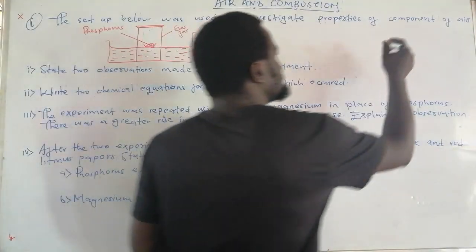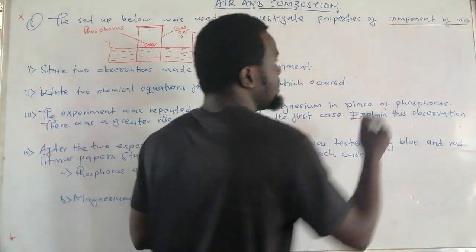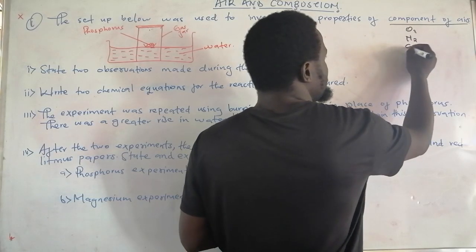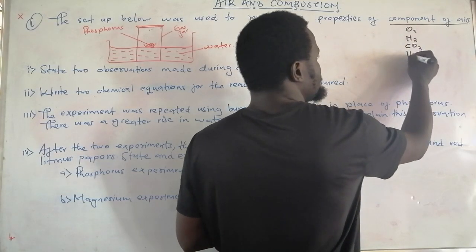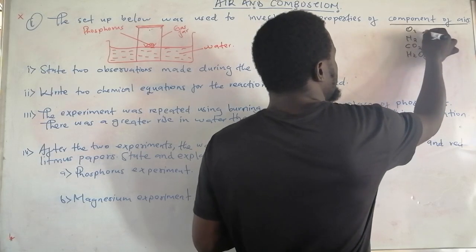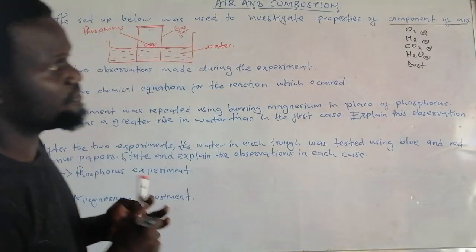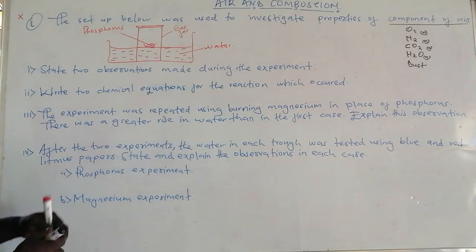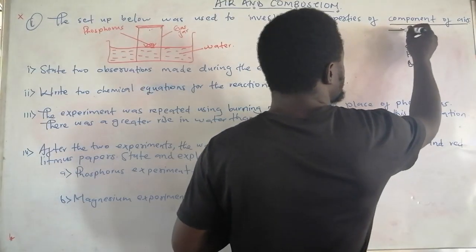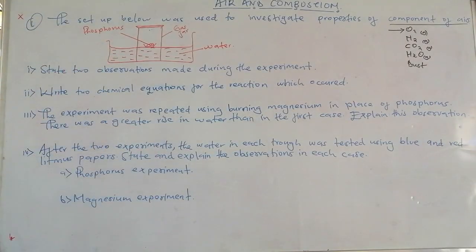Air contains different components: oxygen, nitrogen, carbon dioxide, water vapor, and dust particles. All those are some of the components of air. One of the most active components of air is oxygen. That is what we are going to discuss in our case.